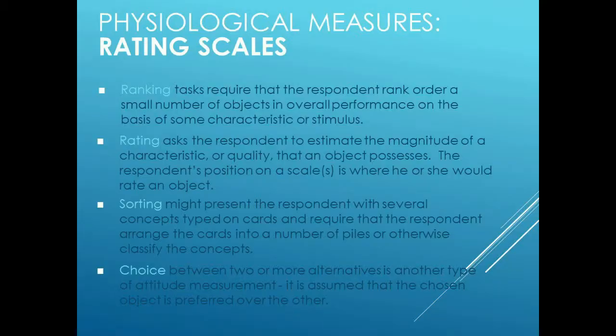In this section we are looking at psychological measures or tools used to assess people's attitudes. There are four basic types of rating scales. First is the concept of ranking — simply ordering a bunch of preferences, such as first, second, third, fourth preference. Alternatively, a rating scale does almost the same thing but also measures the variance between individual ranks, estimating the magnitude of the difference between preferences.